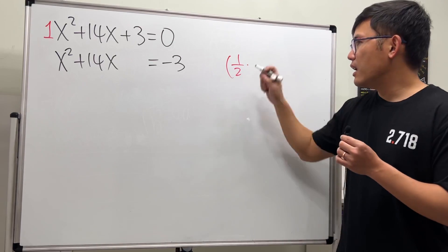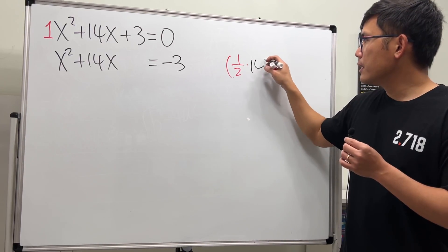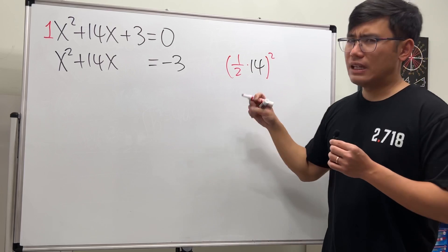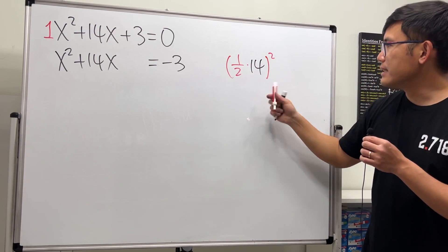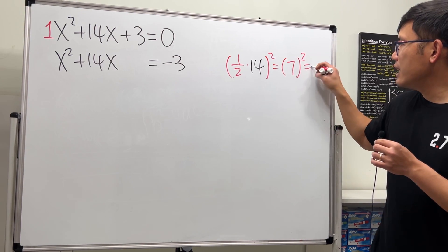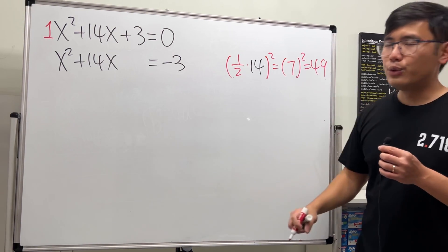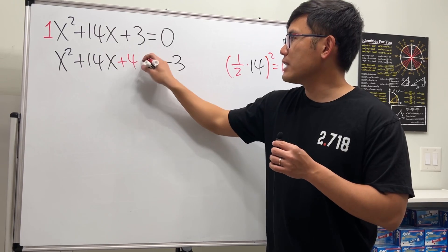Proceed: take half of 14 and square that. That's the formula for the magic number. Half of 14 is 7, and when we square that, we get 49. So we're going to add 49 on both sides.